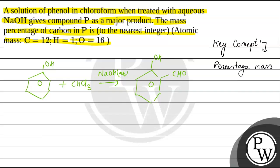This is the structure of salicylaldehyde. Now if we write down its molecular formula, its molecular formula is C7H6O2. This is the molecular formula of the product, which is P according to the given question.